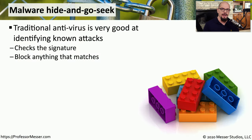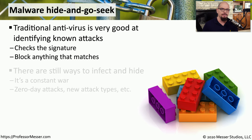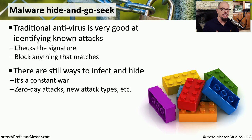The antivirus and anti-malware software that we run on our workstations is very good at stopping known vulnerabilities. There are a set of signatures that are downloaded and integrated with the software, and if anything enters your system that matches one of those signatures, it is blocked. But our systems continue to get infected, so attackers must be finding other ways to get in.